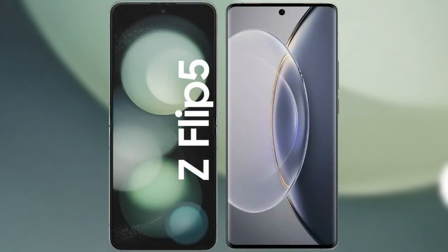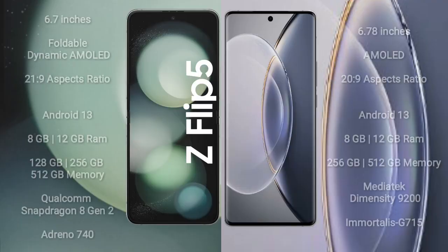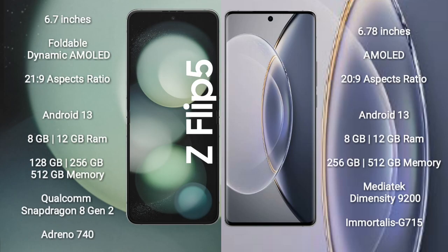I will compare the new Samsung Galaxy Z Flip 5 with Vivo X90 Pro. Samsung Galaxy Z Flip 5 comes with a 6.7-inch foldable dynamic AMOLED display and aspect ratio 21:9. Vivo X90 Pro comes with a 6.78-inch AMOLED display and aspect ratio 20:9.